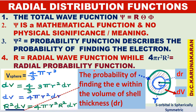The radial probability function gives the probability of finding the electron at a distance r from the nucleus. The radial probability function 4πr²R² is defined as the probability of finding the electron at a distance r from the nucleus.